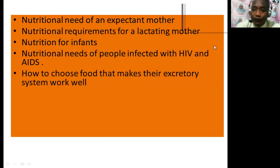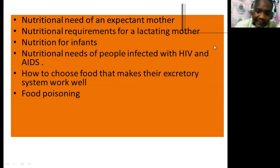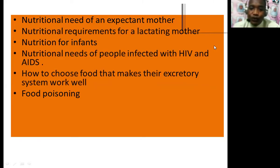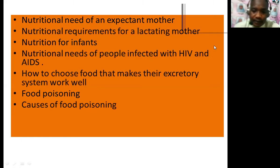Now we move to food poisoning. Food poisoning is an illness caused by eating contaminated foods. This illness mainly attacks the stomach but could also spread to other parts of the body. Things that cause food poisoning are called food contaminants or food poisoning agents. There are two main causes: chemicals and microorganisms. Chemicals that could cause food poisoning at home include fertilizers, kerosene, pesticides, detergents, insecticides, some cosmetics, herbicides, antiseptics, and bleaching agents.